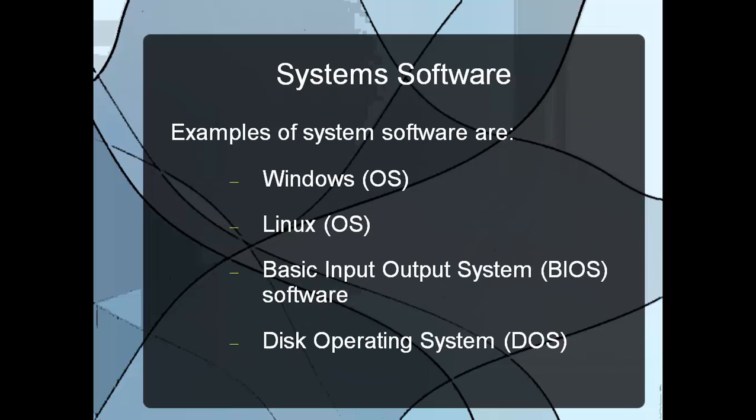Examples of system software include operating systems like Windows and Linux. You also have your BIOS, or basic input-output system, which is the program that runs when your computer initially starts up and is responsible for loading your operating system. It's more of a low-level language. Then there's the disk operating system, or DOS, which often runs in the background of something like Windows and allows you to have line-by-line command of running programs.